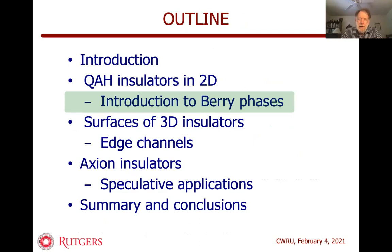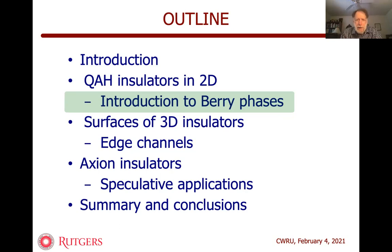What I want to do now is to try to explain in a pedagogical manner what it means that this is a topological system. You've probably heard the notion that somehow the wave functions are twisted in some way in a topological insulator. I want to try to explain in what I think is the most intuitive way what it is that gets twisted up in the wave functions of a two-dimensional quantum anomalous Hall insulator.